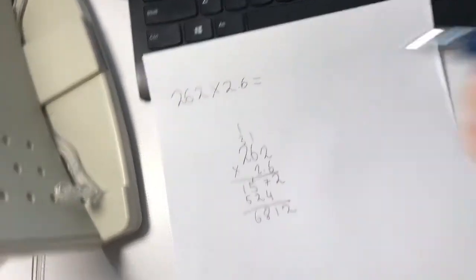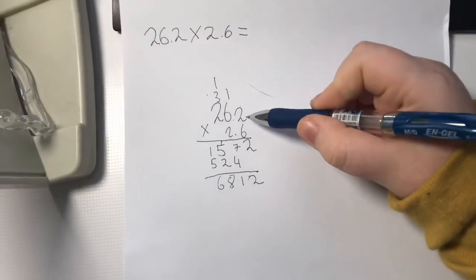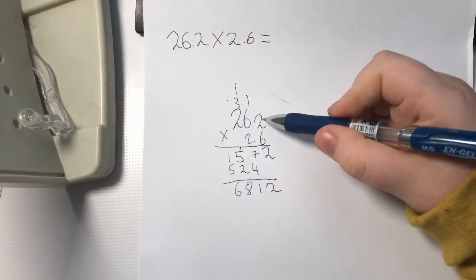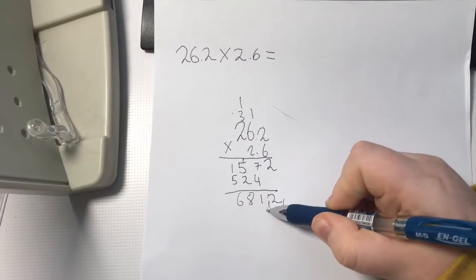Now that you've done the addition, count the amount of decimals that it has. Since my problem has 2 decimals in it, we move the decimal to the left 2 spaces.